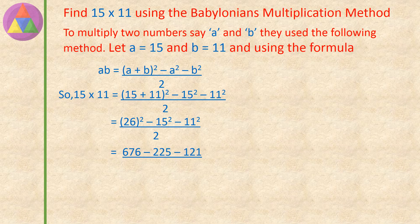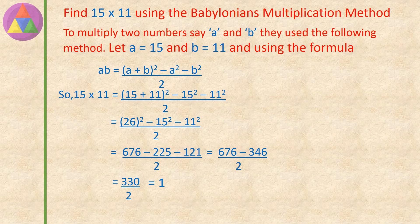15 plus 11 equals 26 square, minus 15 square, minus 11 square, divided by 2. This equals 676 minus 225 minus 121, divided by 2. 676 minus 346 equals 330, divided by 2. 330 divided by 2 equals 165. So 15 into 11 is equal to 165.